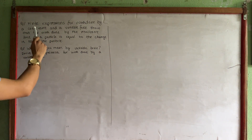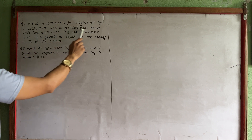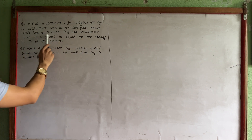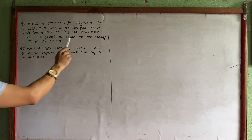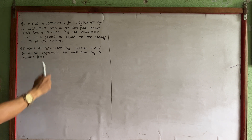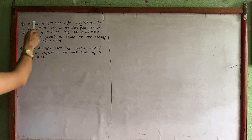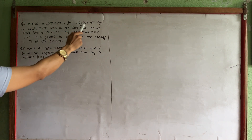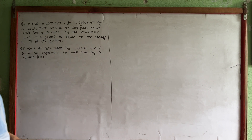The first question is: write expressions for work done by a constant and a variable force, such that the work done by the resultant force on the particle is equal to the change in kinetic energy of the particle. So what does this mean? First, write expressions for work done by a constant and variable force.